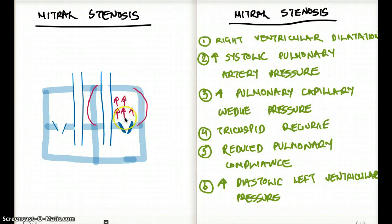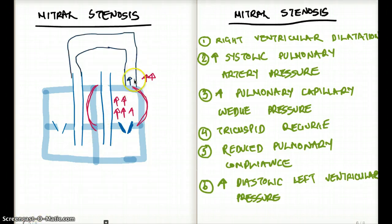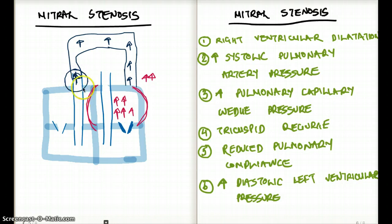The wedge pressure of the left atrium is also going to be high. There is also going to be increased backflow onto the pulmonary vein, so the pressure inside the pulmonary vein is also going to rise, which is going to cause backflow pressure and increased pressure in the pulmonary artery.